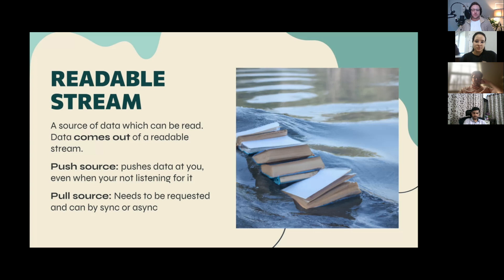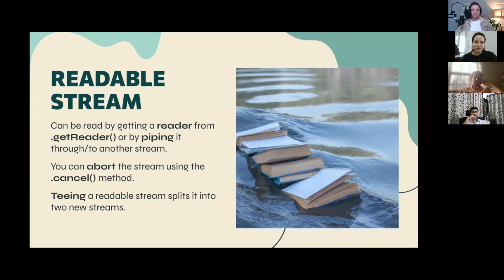There are three most common stream types. First: the Readable Stream, our data source. There are two types of data sources — push and pull. Push sources start pushing data when the stream is created and continue even when you aren't listening, like WebSockets and streaming video. Pull sources need to be asked for data, like HTTP requests. You can also 'tee' a readable stream, splitting it into two new streams that each receive the same data — useful for sending one stream to a client and another to a logger.